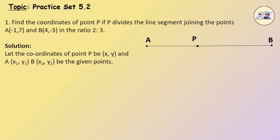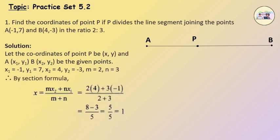Here x1 = −1, y1 = 7, x2 = 4, y2 = −3, m = 2, and n = 3. Therefore, by the section formula, x = (mx2 + nx1) / (m + n).